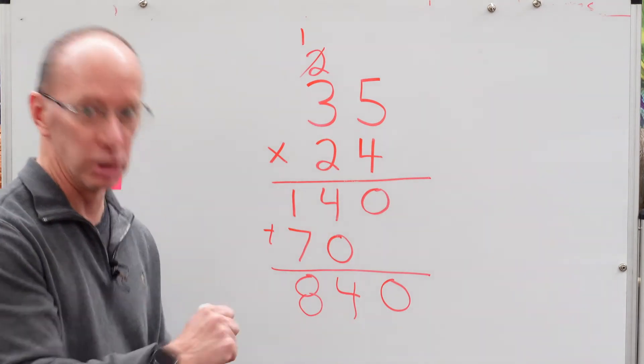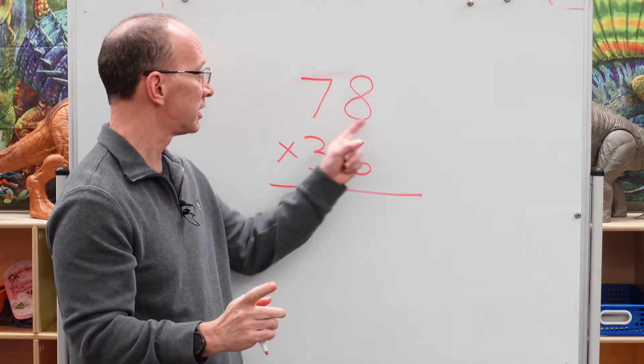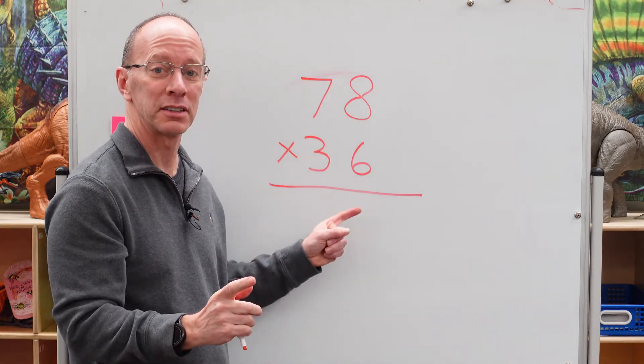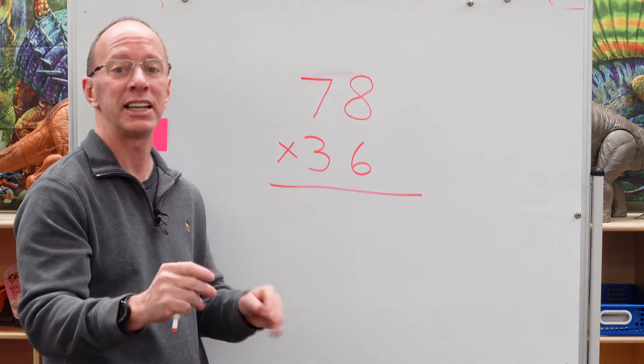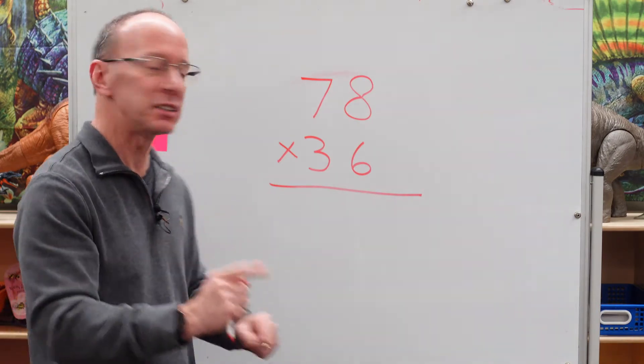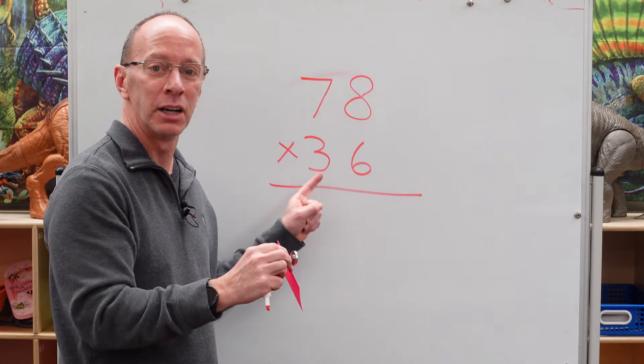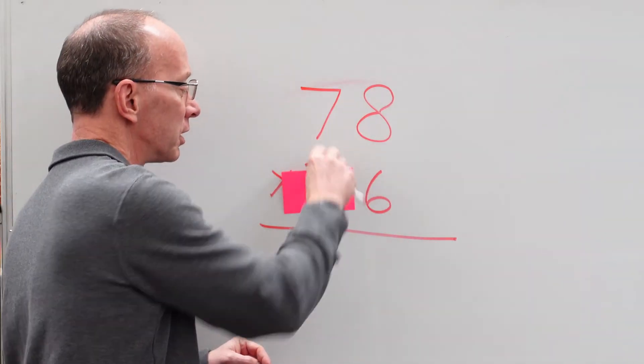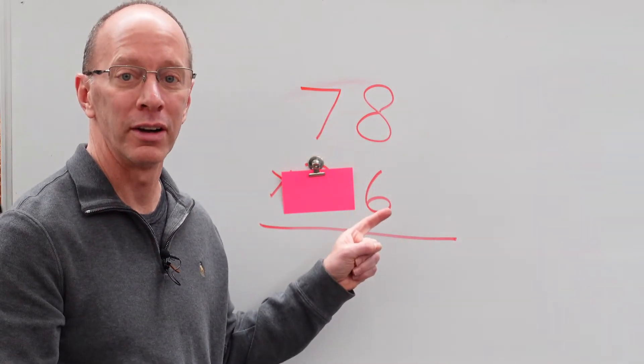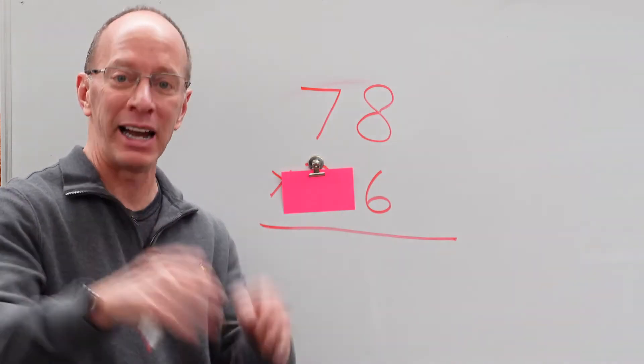Ready to try another one? Let's do it. All right. We got 78 times 36. Again, don't worry. Take it step by step. Easy, cheesy, lemon squeezy. Grab our little index card. We're going to cover this number up so we don't get too confused. We know how to do this, don't we? You bet. You guys are math ninjas.